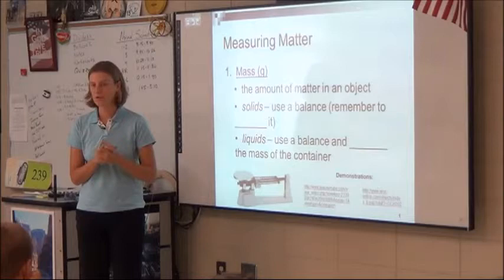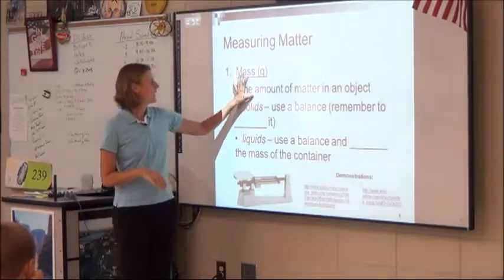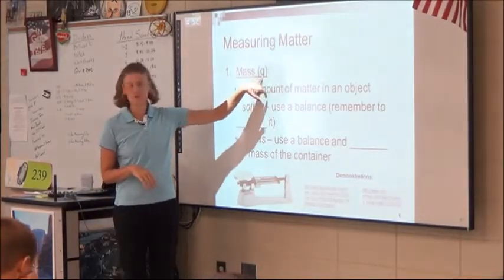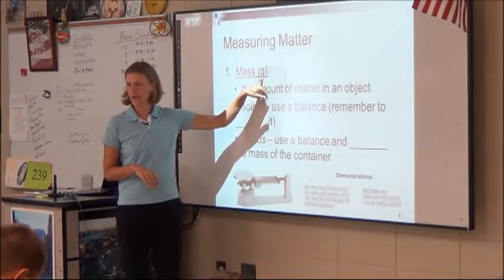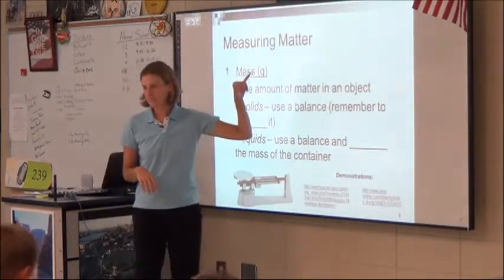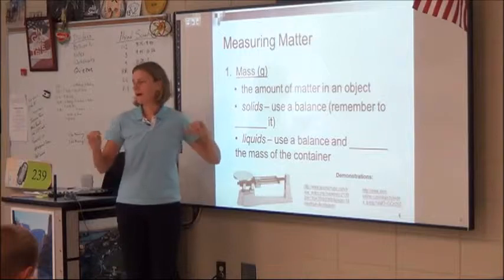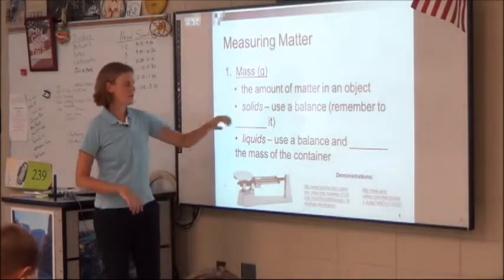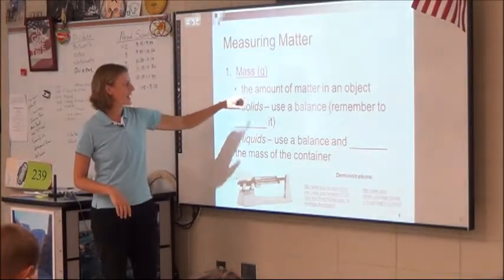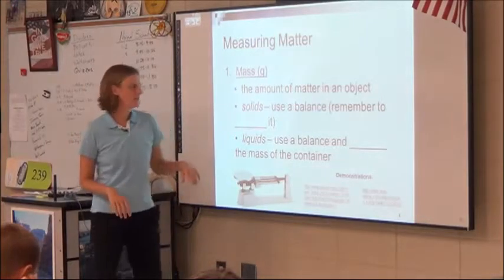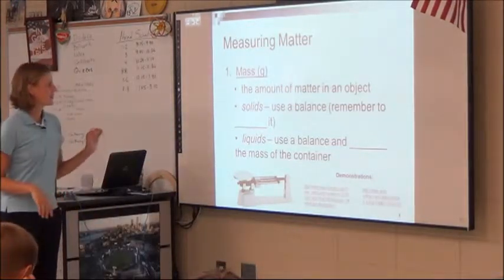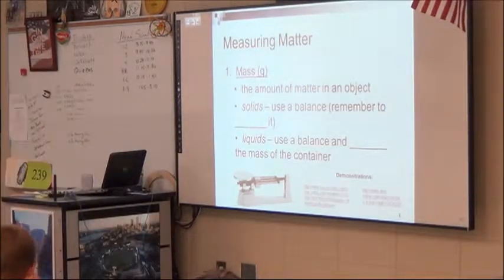We're going to go through four different quantities that we can measure. Of course there's many other things we could measure, but starting with mass. Mass in the metric system is measured in what? Good, grams. Don't say pounds. Measured in grams. Your scale should have a little G on it so you should know it's grams. What is mass? It's the amount of matter in an object.